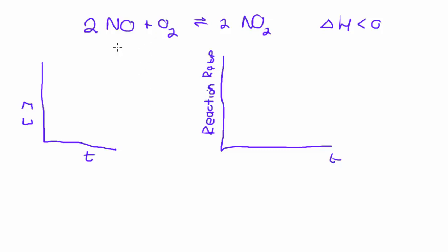Before we have any disturbances, on our concentration versus time graph, NO will be up here and O₂ will have a slight fall in their concentration. As the reaction starts, it's at its highest concentration but then gradually decreases. The concentration of NO₂ will be zero when we start, but as the reaction progresses we see a little increase, and then there will be a plateau.